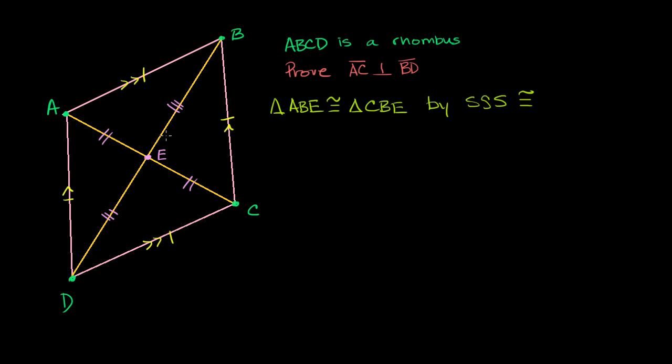We have a side, side, and side. A side, side, and side. And we know that by side, side, side congruency. And then once we know that, we know that all the corresponding angles are congruent. And in particular, we know that angle AEB is going to be congruent to angle CEB, because they are corresponding angles of congruent triangles.